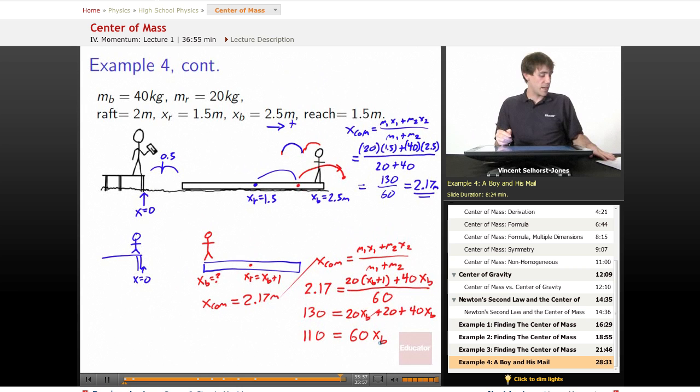And then we divide each side by 60 and we wind up getting 1.83 equals the boy's location at the end.